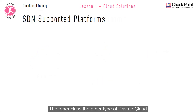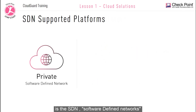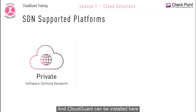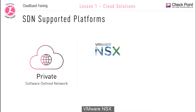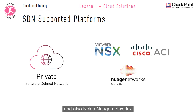The other type of private cloud is software-defined networks. A software-defined network can virtualize the whole network infrastructure, and CloudGuard can be installed here to protect the whole virtualized network infrastructure. On a software-defined network, CloudGuard is supported on VMware NSX, Cisco ACI, and also on Nokia Nuage Networks.